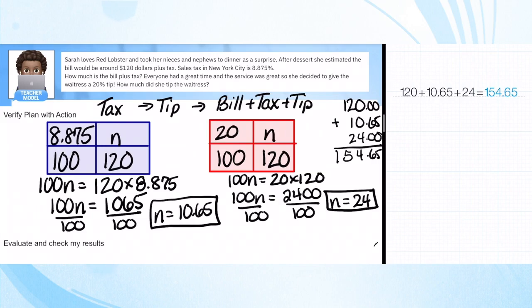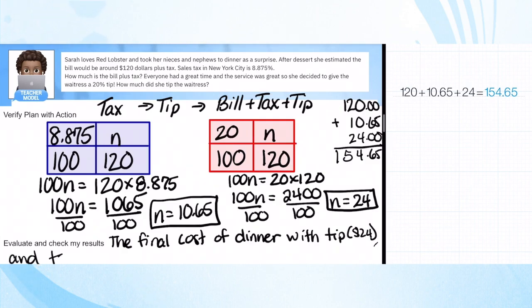Let's put that in: the final cost of dinner with tip $24 and tax $10.65 is $154.65. So you can hit pause and jot this down.